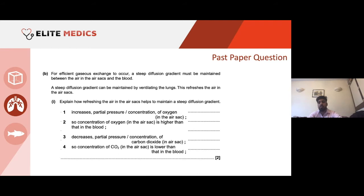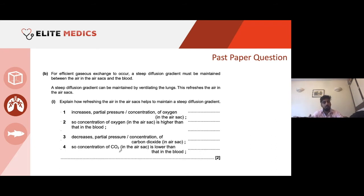Similarly, it decreases the concentration of CO2 in the sac as we breathe it out, so it's removed from the alveoli. Therefore, CO2 in the alveolus is lower than in the blood, so blood can move its CO2 to the alveolus. It's all very logical — if you think about the gradients and where particles will move, you can build a picture of what's happening.